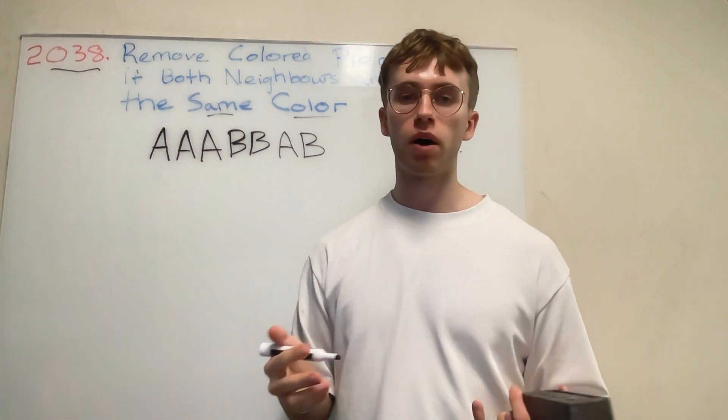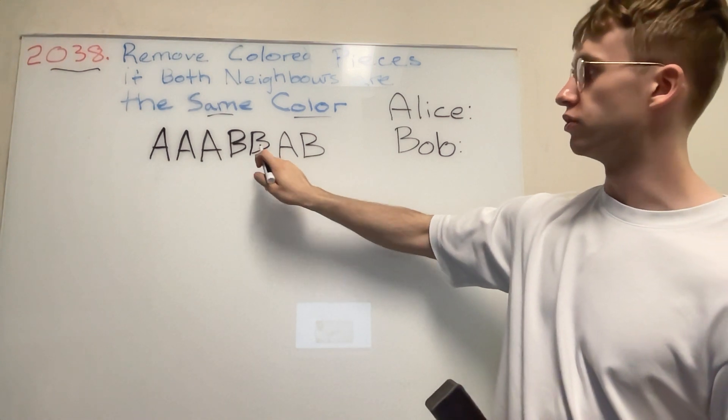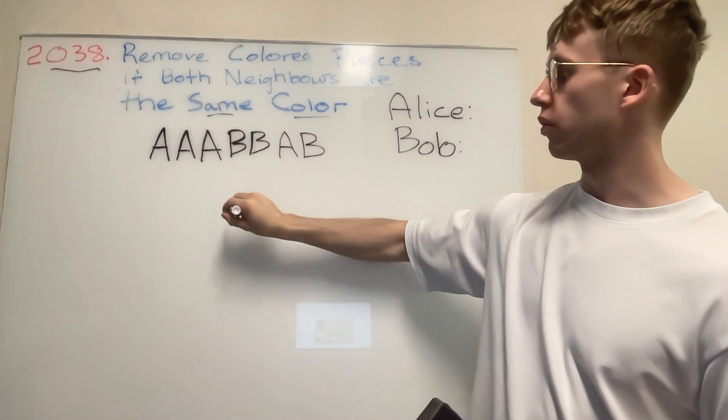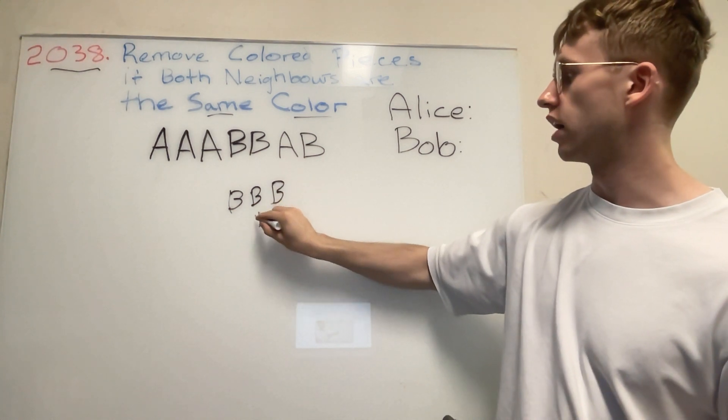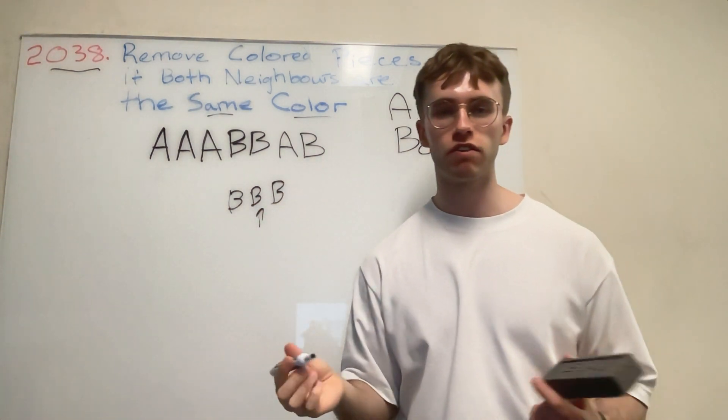Basically for Bob, when it's Bob's turn, Bob must remove letter B's, but Bob can only remove the middle letter B when there's three contiguous or consecutive B's in a row.